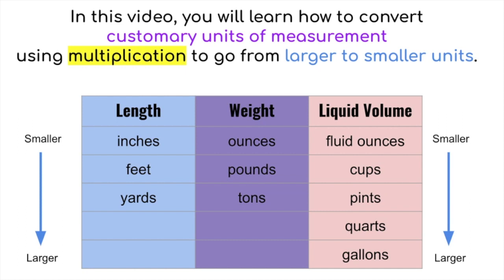Here is a list of different units of length, weight, and liquid volume. For length, we have the smallest unit, inches, and then feet, and then yards. For weight, we have our smallest unit of ounces, and then pounds and tons.